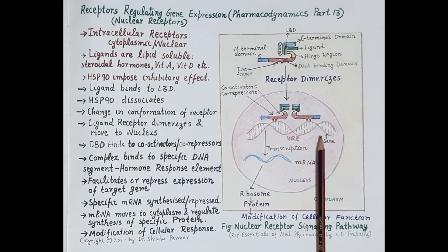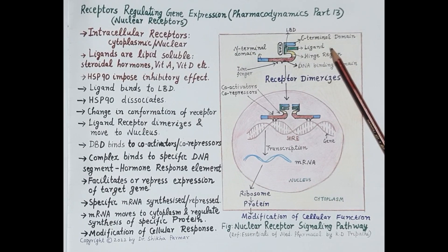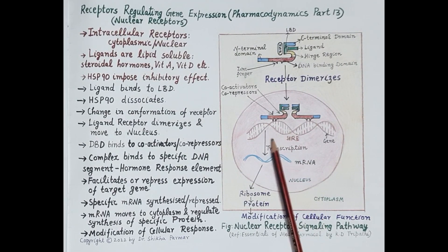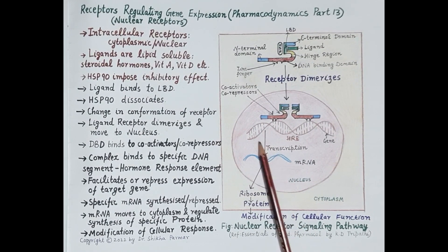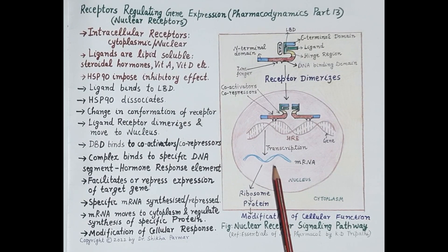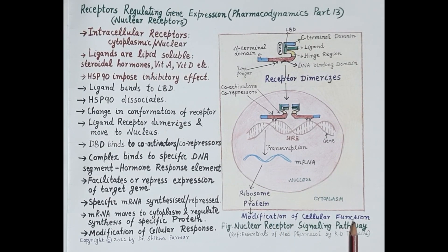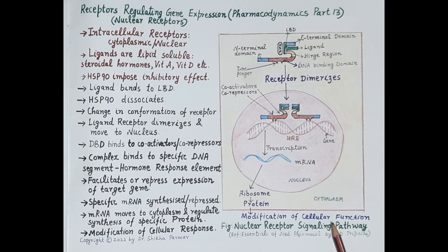As per the signal received by the ligand, this complex either facilitates or represses the expression of specific genes. So either the process of transcription is facilitated or it is inhibited, and thus either specific messenger RNA is synthesized or synthesis of messenger RNA is inhibited. This messenger RNA then regulates the synthesis of specific proteins by the ribosomes in the cytoplasm, and thus modifies cellular function. This is how receptors regulating gene expression produce the cellular or physiological response.